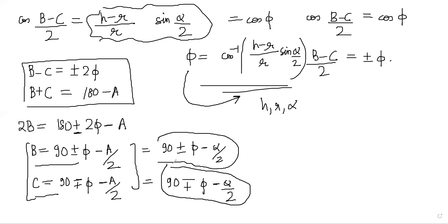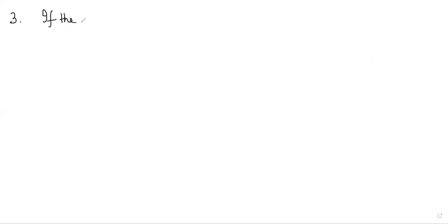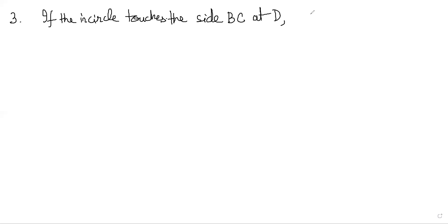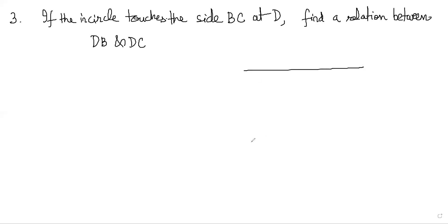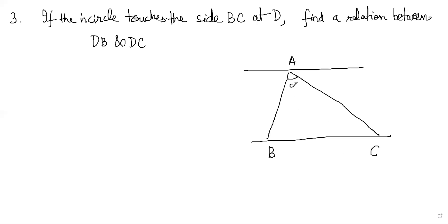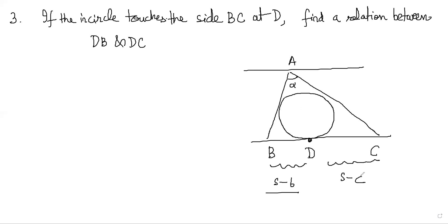The last part of the question asks: if the incircle touches side BC at D, find a relation between DB and DC. Roughly drawing the figure: triangle A, B, C with angle alpha at A, an incircle touching side BC at D.